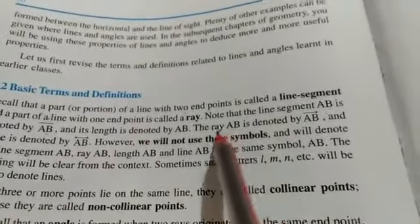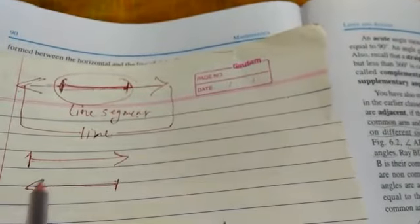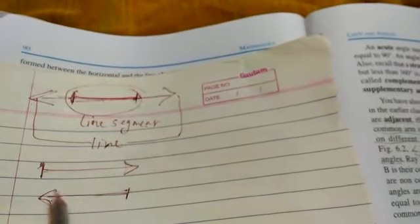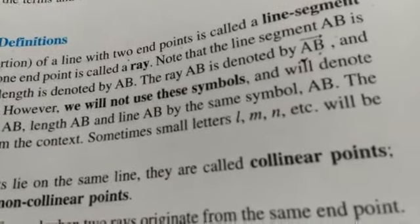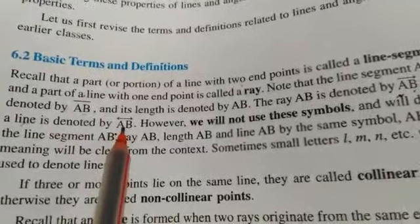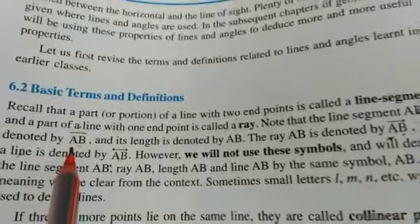Now, what is a ray? If one point and one arrow is given going to either side, then it is known as a ray. A ray is denoted by AB with an arrow (AB→). For a line AB, the symbol is line AB. For a ray, it is ray AB. And for a segment, simply a bar is placed over AB.